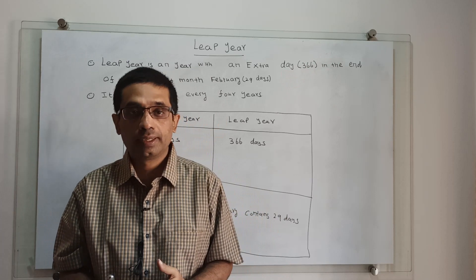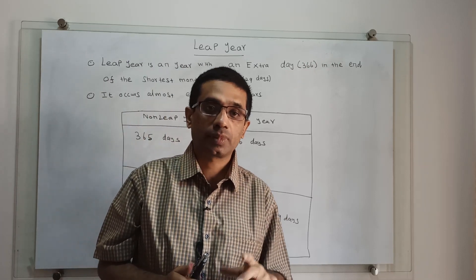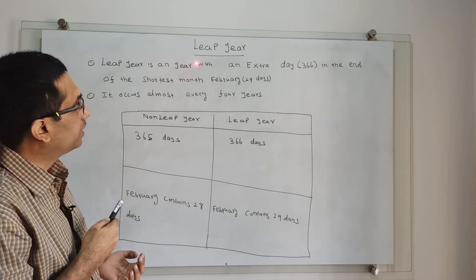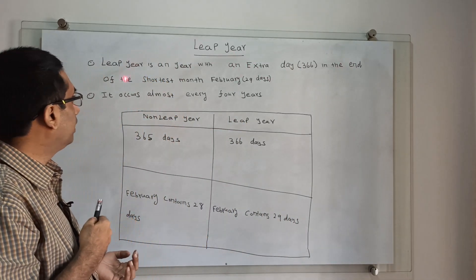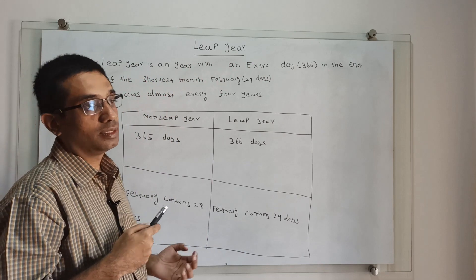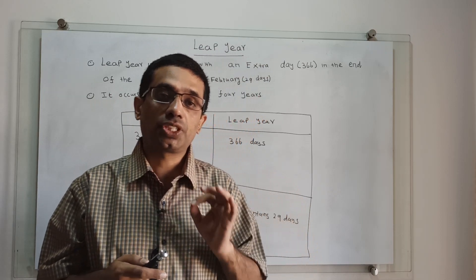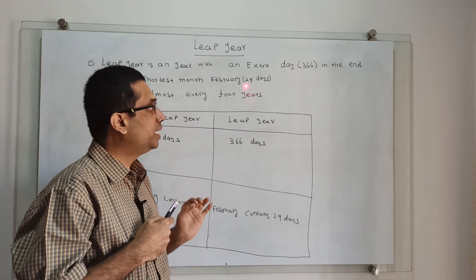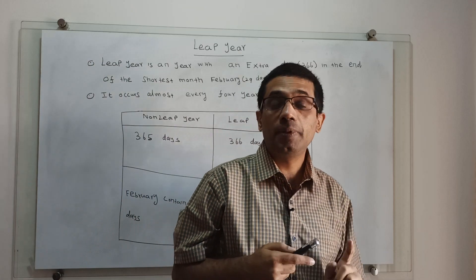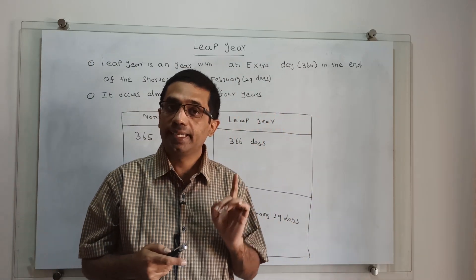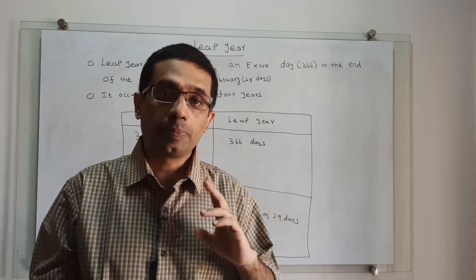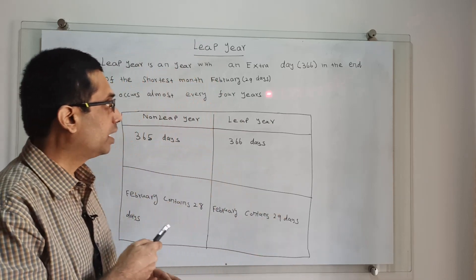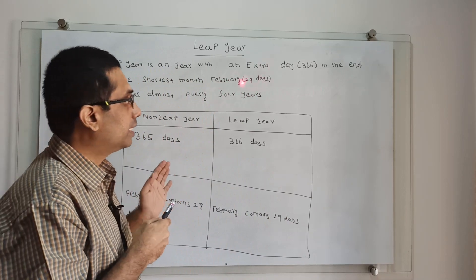Naturally we will have a question: where is the additional one day getting added? The answer is that the extra day is added at the end of the shortest month, February. Every year February is the shortest month, which usually contains 28 days, but in a leap year February contains an extra day — that means 29 days. That's why the leap year contains 366 days.